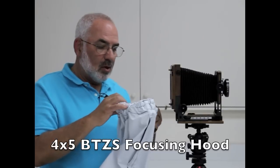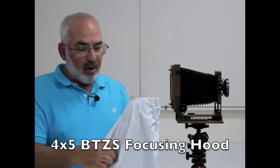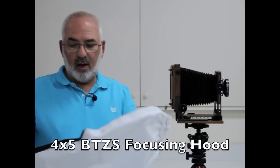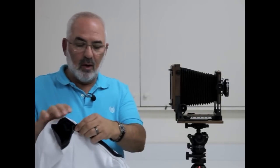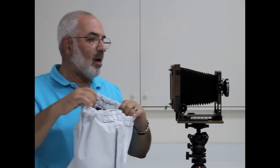Right here I've got a Shin Ho camera. Basically the bottom of the focusing cloth is the Velcro right here. That's where your head goes. And the elastic here goes around the camera.